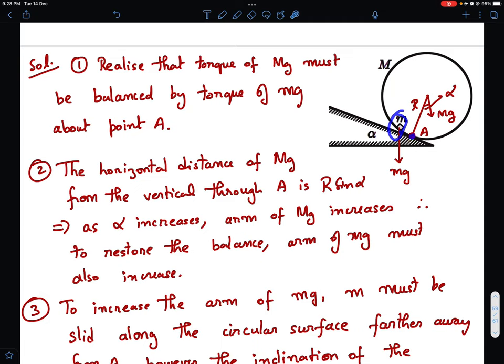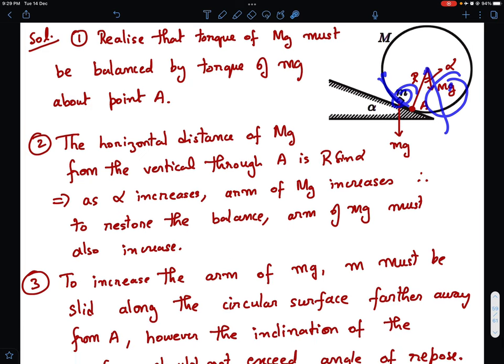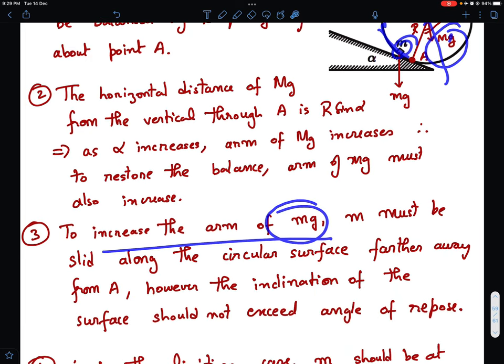So we also have to increase the arm of the small mg so that balance is restored. And how will you increase the arm of small mg from point A? You have to move this further away from point A. So what would happen if you move it further from point A, but you cannot keep on moving this indefinitely from point A. Because if you take it too far away, then it will start slipping. Because when this angle becomes equal to angle of repose, then this will be at the verge of slipping and you cannot take it any further.